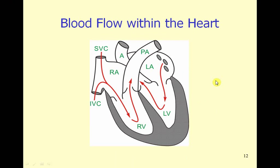The actual flow tracing of blood within the heart is depicted in this diagram. Blood flow enters the right atrium from the systemic circulation through the superior vena cava, which drains primarily the upper body and head, and the inferior vena cava, which is the blood that is returning from the lower regions of the body. That blood entering into the right atrium will pass through the tricuspid valve into the right ventricle.